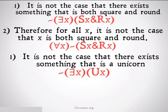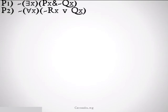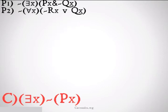Another example: it's not the case that there exists something that is a unicorn; therefore, for all x, it is not the case that x is a unicorn. Now we're going to do a logic problem to test our abilities with change of quantifier. We have two premises: it's not the case that there exists an x such that x is P and it's not the case that x is Q; and it's not the case that for all x, it's not the case that x is R or x is Q. We want to conclude: there exists an x such that it's not the case that x is P.